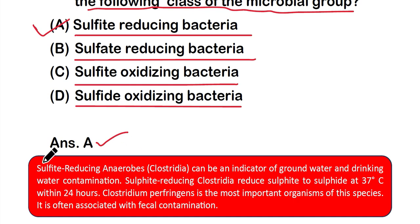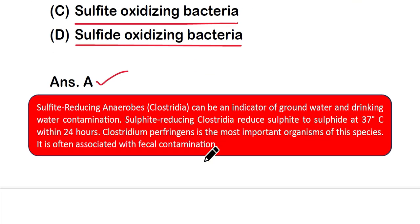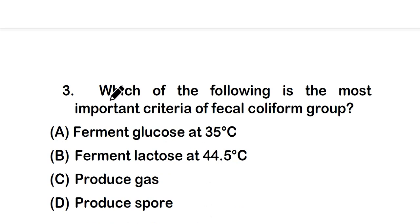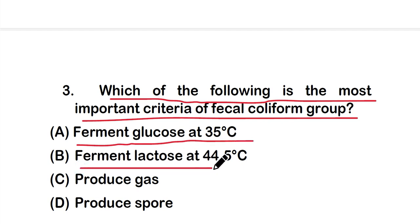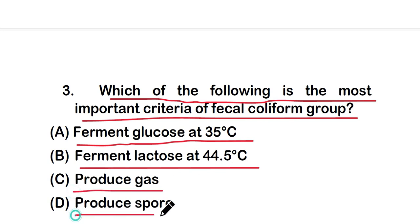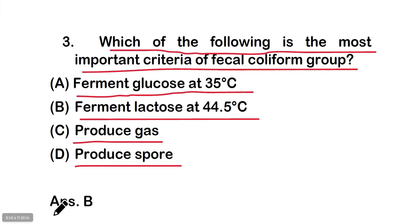Clostridium is associated with fecal contamination and is an anaerobic organism — it reduces sulfite to sulfide, which is the origin of its classification. Question three: which of the following is the most important criteria of the fecal coliform group? The right answer is option B — they ferment lactose at 44.5°C.